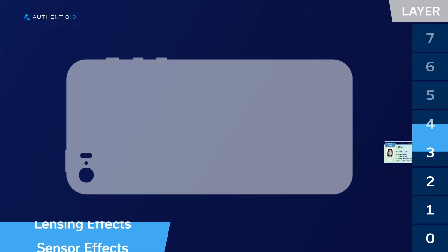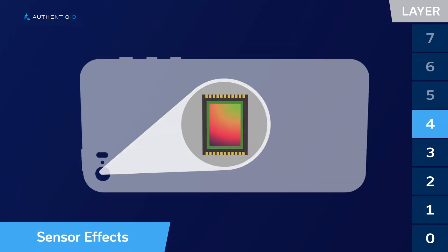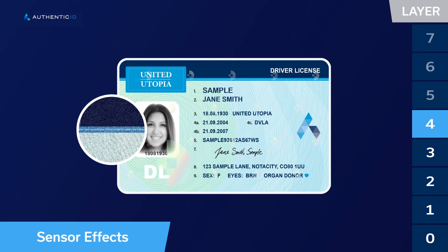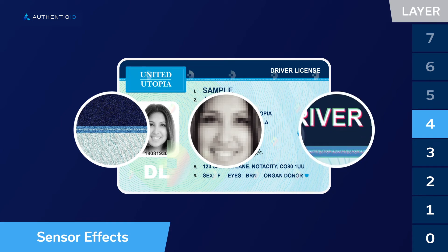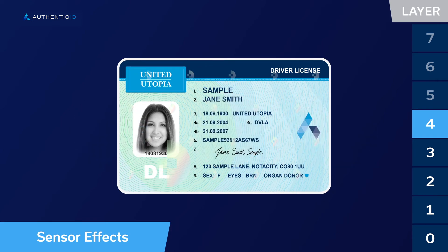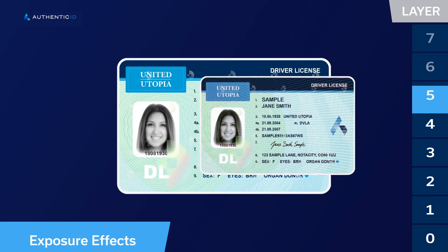The fourth layer detects sensor effects, including noise, pixelation, manufacturing defects and sensor quality, as well as moiré effects related to taking photos of computer screens.